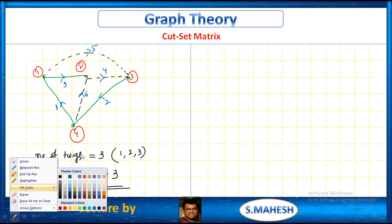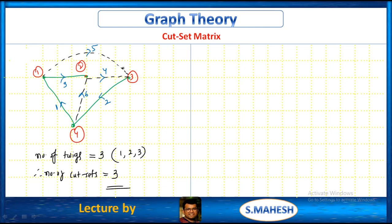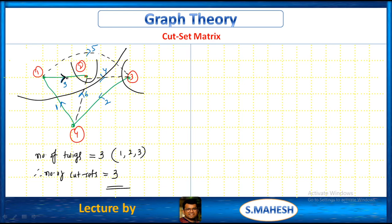What are the cut sets? We don't have a cut set where there are two twigs. So we take this cut set — it covers only one twig at a time. The cut set should cover only one twig at a time. See the current direction for each cut set. Cut set 1 covers branches 1, 6, 4. Cut set 2 covers branches 2, 4, 5.